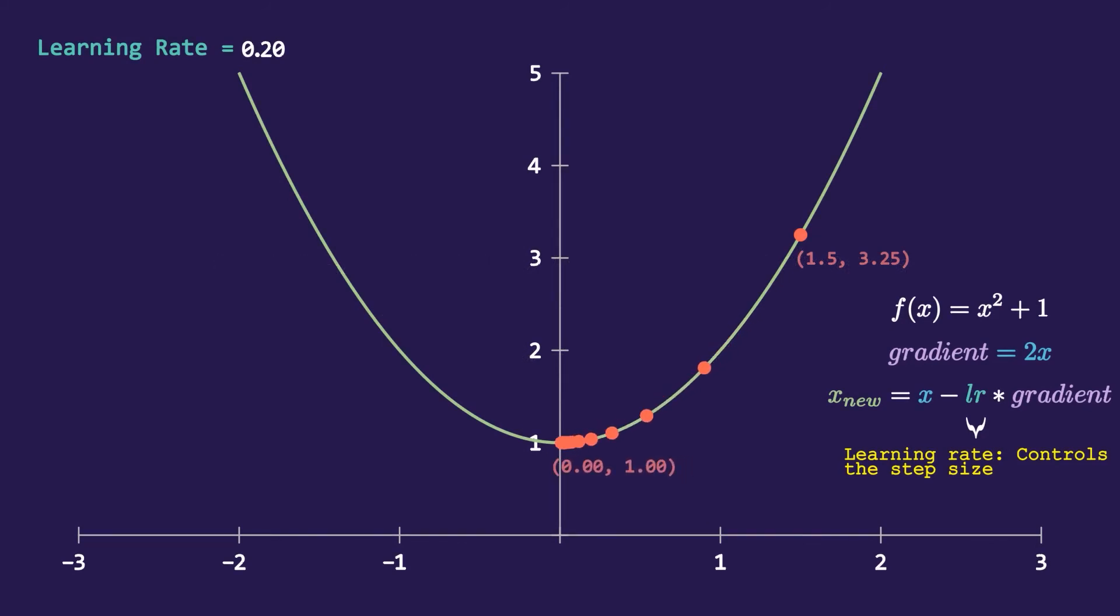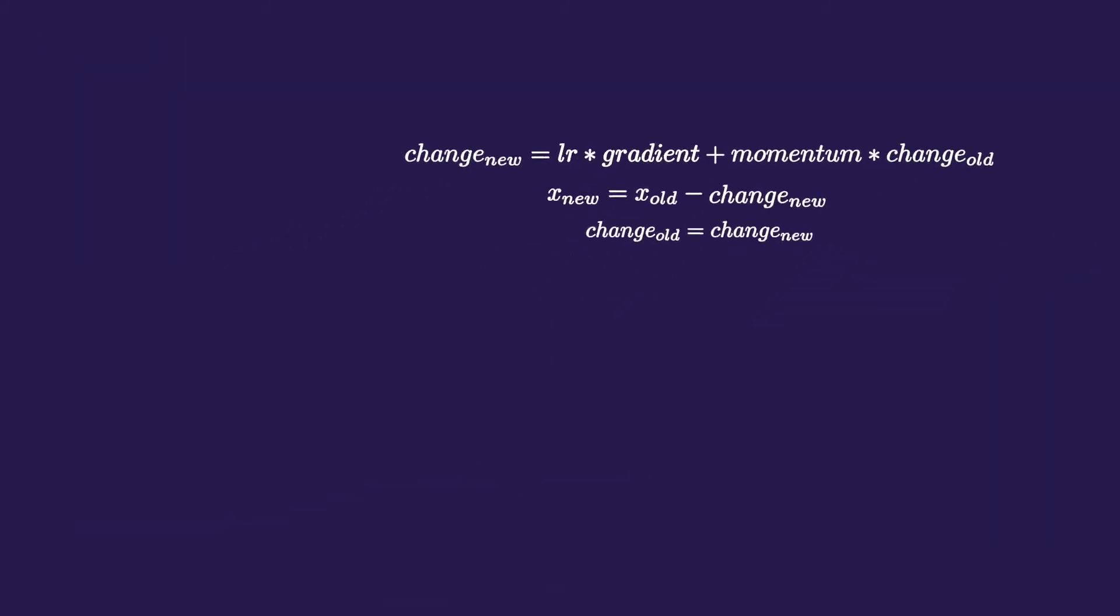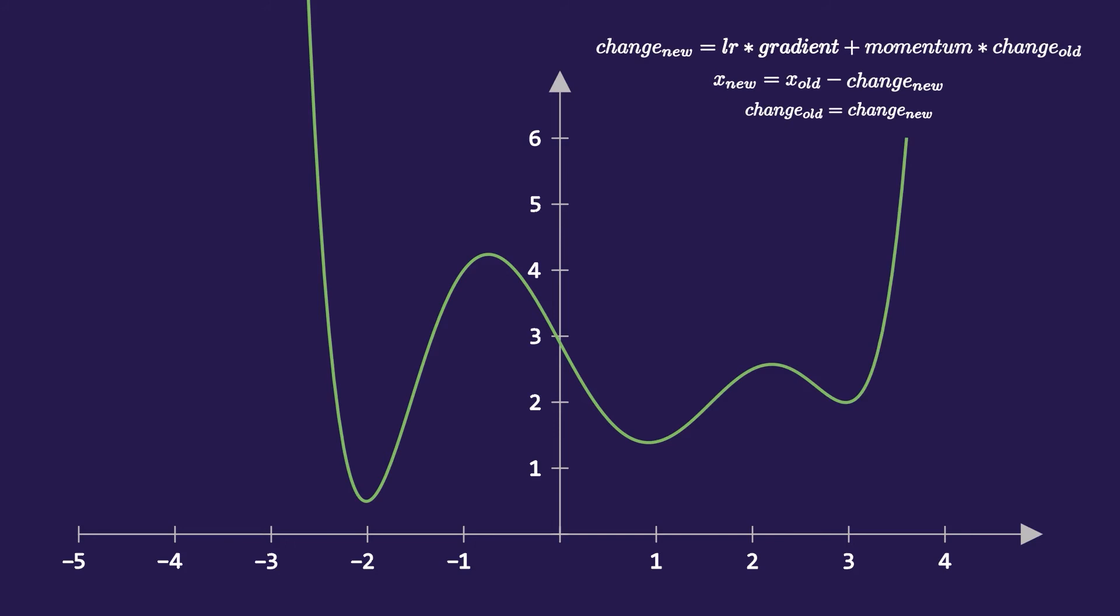When we used gradient descent on this curve or data it was able to find the minimum without any sweat but not every function is as sincere as this. If we have data like this it's not easy to find the minimum. Let us run normal gradient descent on this data. And it has completely screwed up.